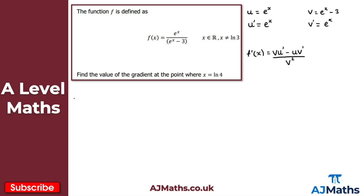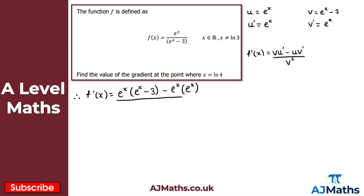Substituting everything in: v times u prime is e to the x multiplied by (e to the x minus 3), and we subtract u times v prime which is e to the x multiplied by e to the x. This is all divided by v squared, which is (e to the x minus 3) all squared.